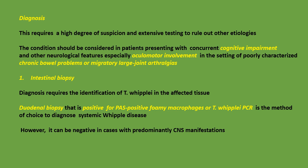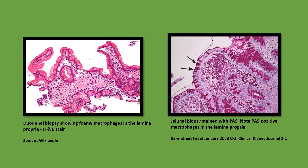Intestinal biopsy: diagnosis requires the identification of Tropheryma whipplei in the affected tissue. Duodenal biopsy positive for PAS-positive foamy macrophages or Tropheryma whipplei PCR is the method of choice to diagnose systemic Whipple disease; however, it can be negative in cases with predominantly CNS manifestations. The figure on the left shows a duodenal biopsy with foamy macrophages in the lamina propria (H&E stain); the figure on the right shows a jejunal biopsy stained with PAS, demonstrating PAS-positive macrophages in the lamina propria.